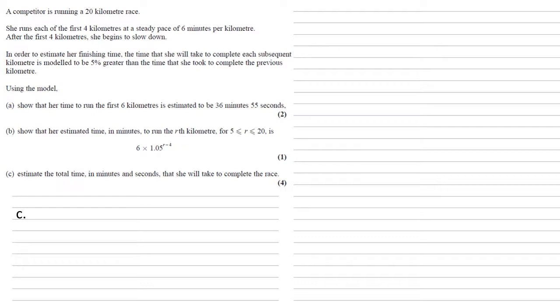The rest of the race we're going to model as a geometric sequence, so we're going to sum it from r = 5, the first kilometer where her times start changing, up to r = 20, the last kilometer of the race, and we find the sum of 6 × 1.05^(r-4), which is what we've just worked out in part b.